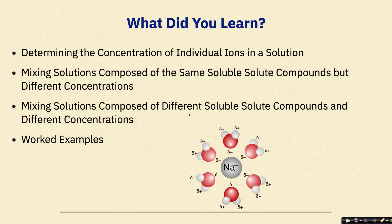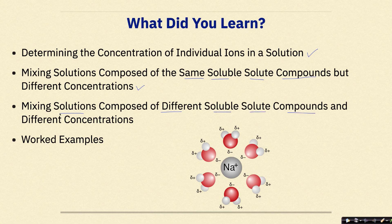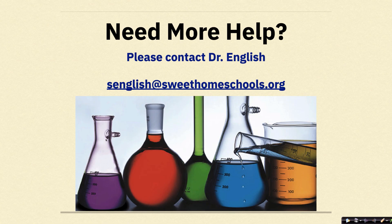So what did you learn? We talked about how to determine the concentration of individual ions in a solution. We looked at mixing solutions composed of the same soluble solute compounds at different concentrations, and then mixing solutions composed of different soluble solute compounds at different concentrations, working through a bunch of examples throughout. Need more help? Feel free to contact me. Have a great day.